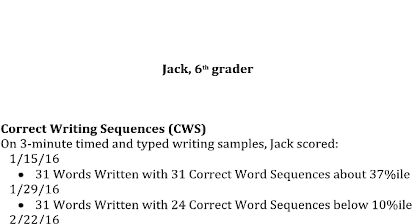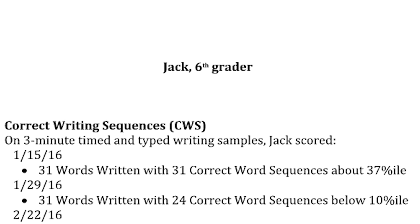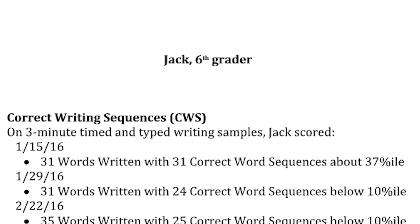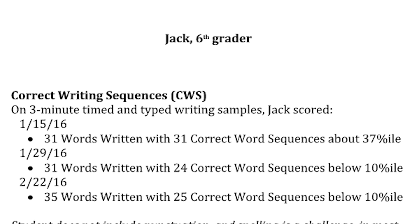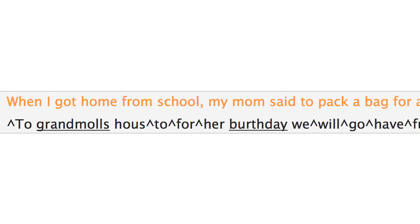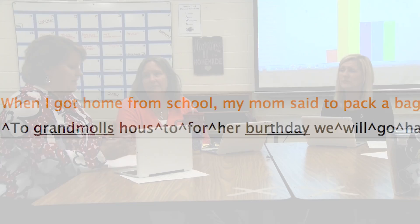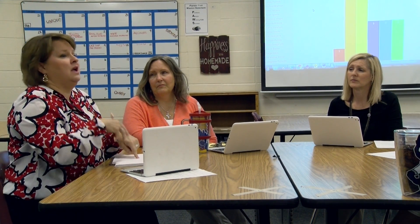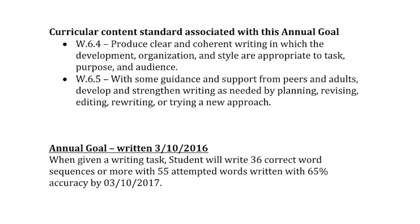Teachers then use the data to plan for instruction. For example, here is an IEP goal written for sixth grader Jack. He completed three bi-weekly short writes over a six-week period. He averaged 33 words and 27 correct word sequences, and he scored below the tenth percentile in two out of three writings. Jackie and her team noted that spelling was a big problem. In addition, Jack struggled with organizing his thoughts and moving them from his brain to the short write.